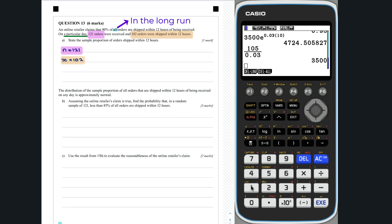102 of these orders were shipped within 12 hours of being received. So, the sample proportion p hat can be calculated by x divided by n. So, the sample proportion is 0.843.